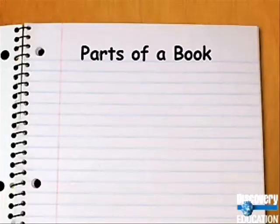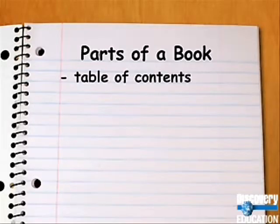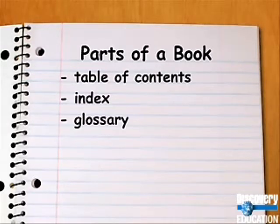Knowing the parts of a book can help you figure out where to look for information. The parts of a book include the table of contents, the index, and the glossary.